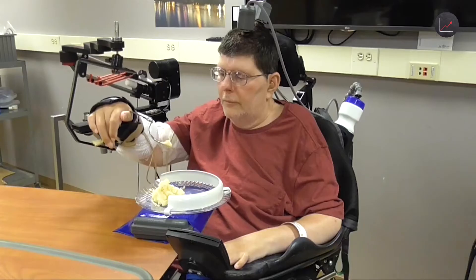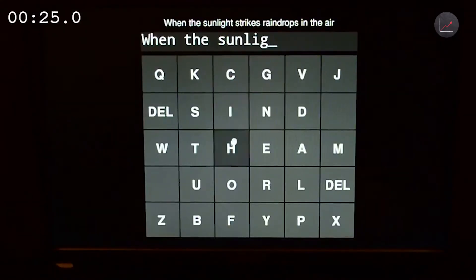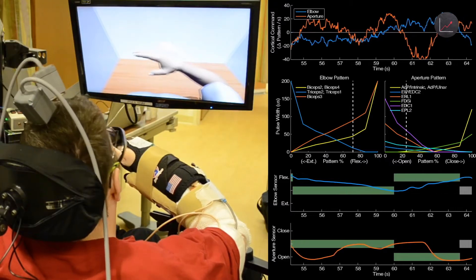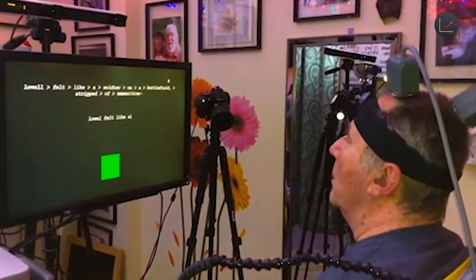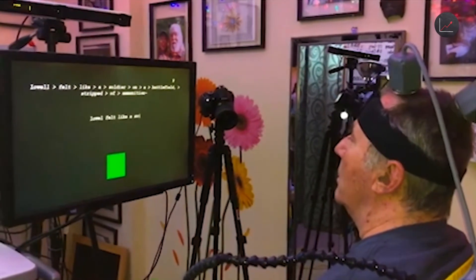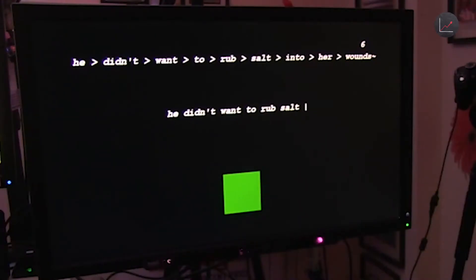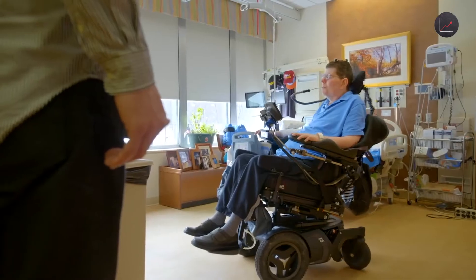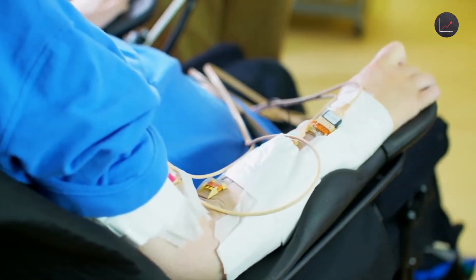Over the 17 years of the BrainGate trials, the technology has come a long way, particularly as advances in machine learning have made strides helping to decode data recorded from the brain. Recently, they were even able to have a paralyzed man imagine the motion of handwriting and translate that into text on a screen with 94% accuracy. But clinical trials and university labs, they're really just a first step.